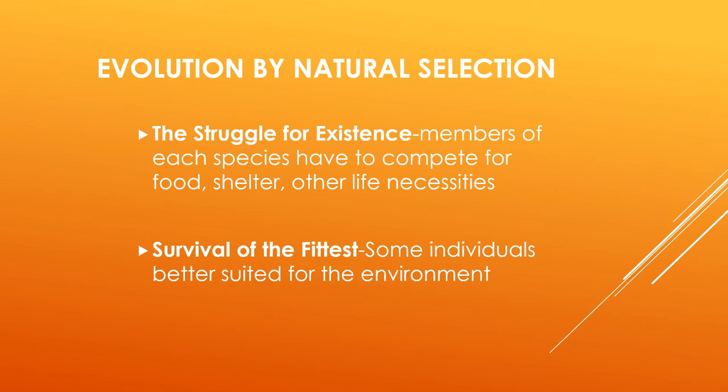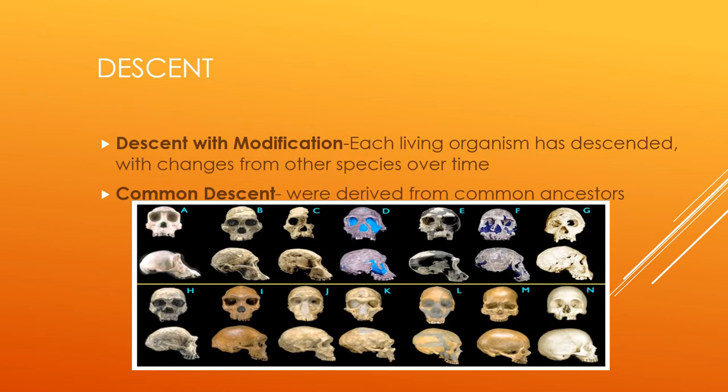The struggle for existence: members of each species must compete for food, shelter, and other life necessities — survival of the fittest. Some individuals are better suited for the environment. There are organisms that really need to compete for their survival, otherwise they will die. Descent with modification: living organisms have descended with changes from other species over time. Common descent means species were derived from common ancestors.